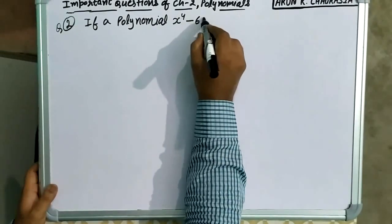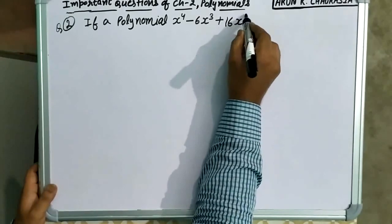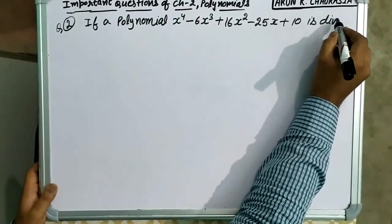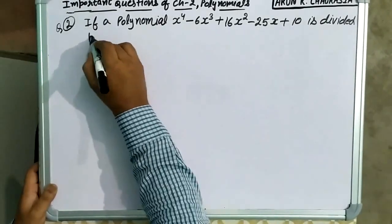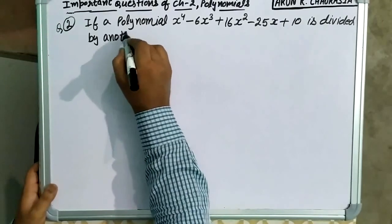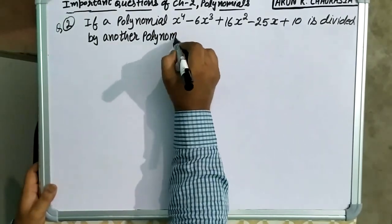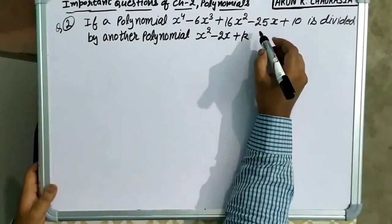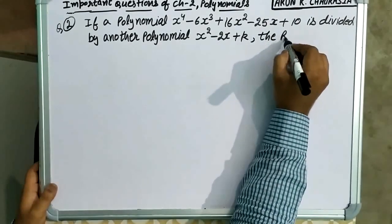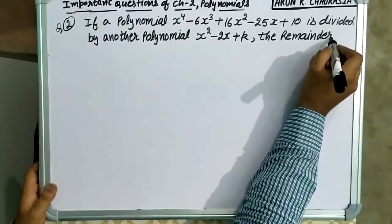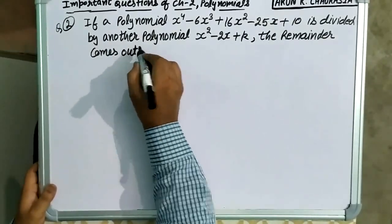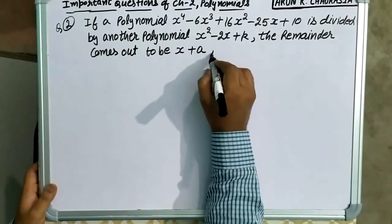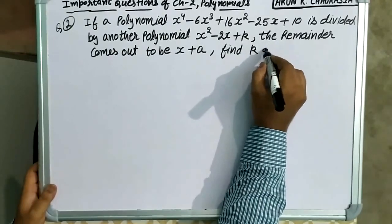x raised to power 4 minus 6x cube plus 16x square minus 25x plus 10 is divided by another polynomial x square minus 2x plus k. The remainder comes out to be x plus a. Find k and a.